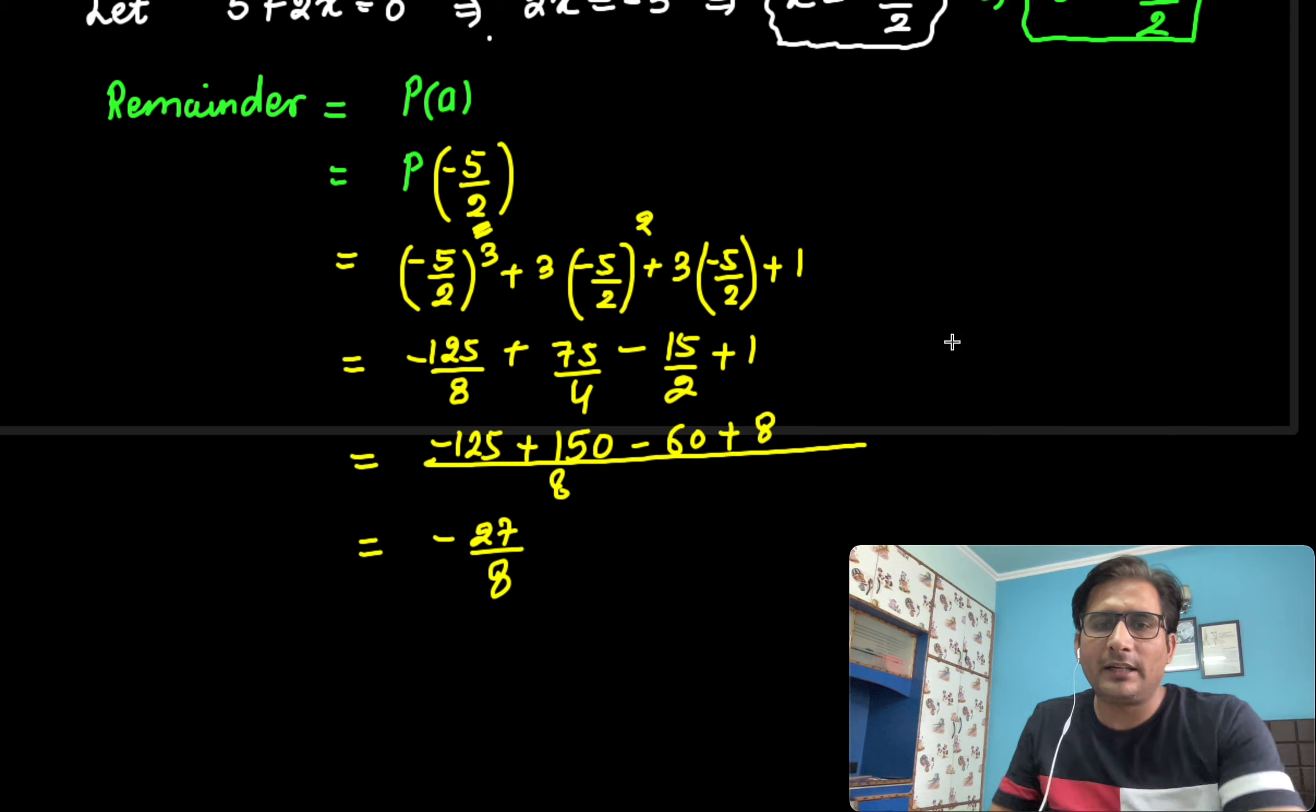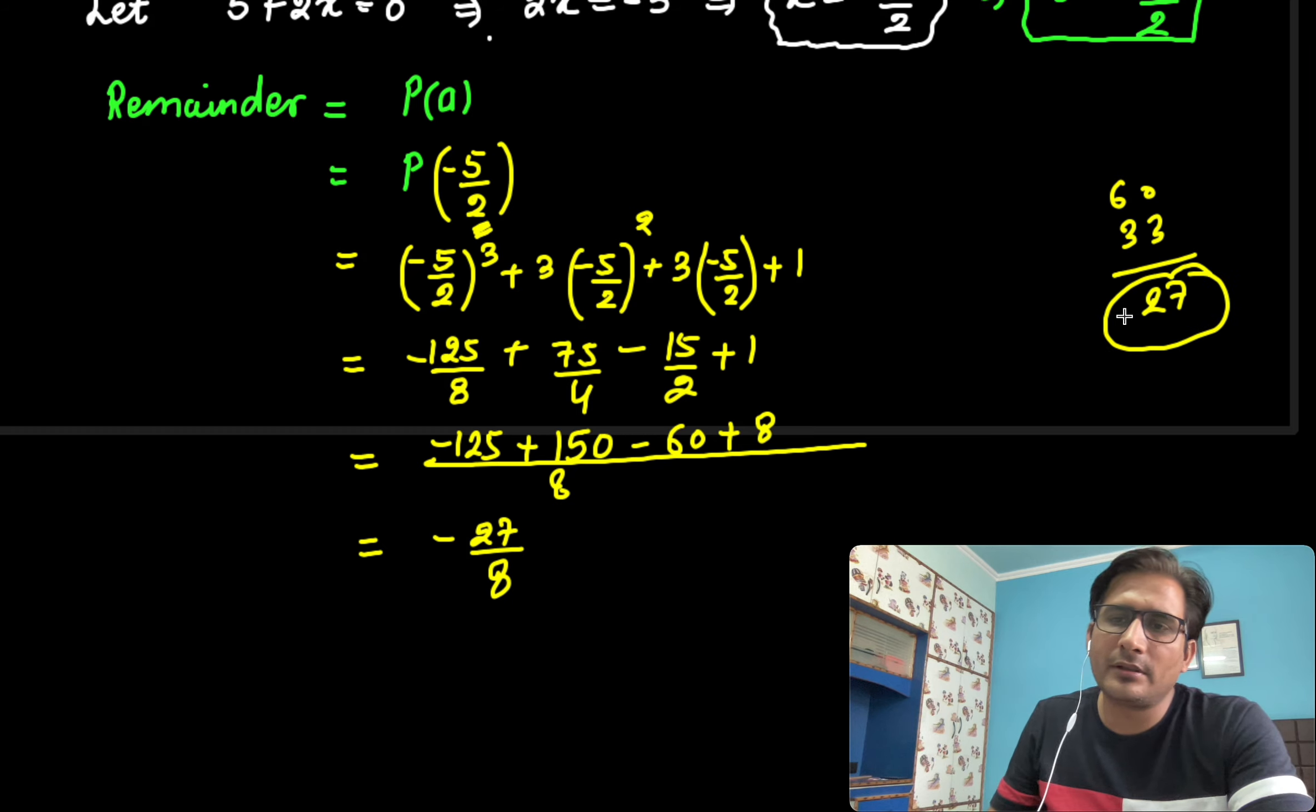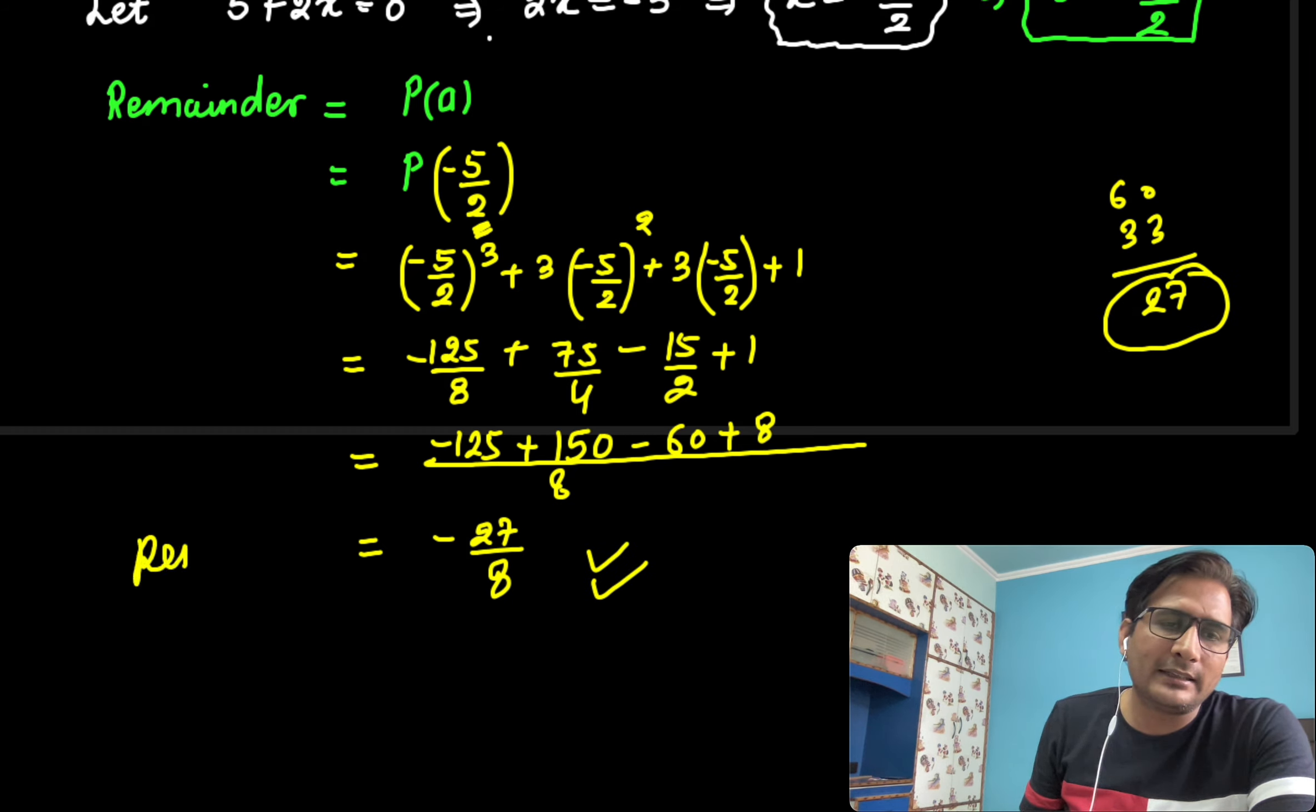If you simplify this, it comes out to be minus 125 plus 150 minus 60 plus 8, which is 33. 60 minus 33 is 27. Yes, absolutely right. It comes out to be minus 27 by 8 is the remainder in this case.